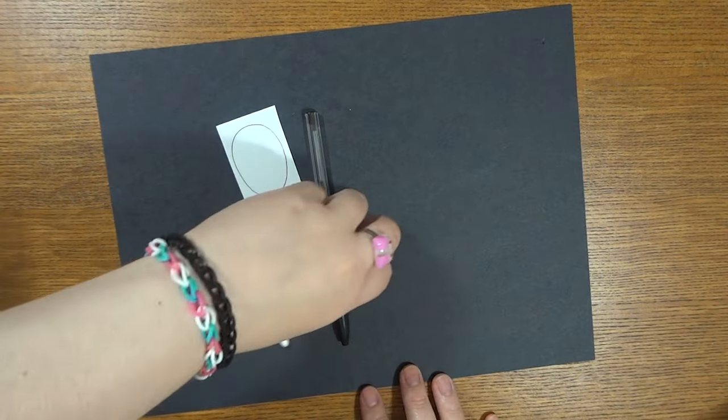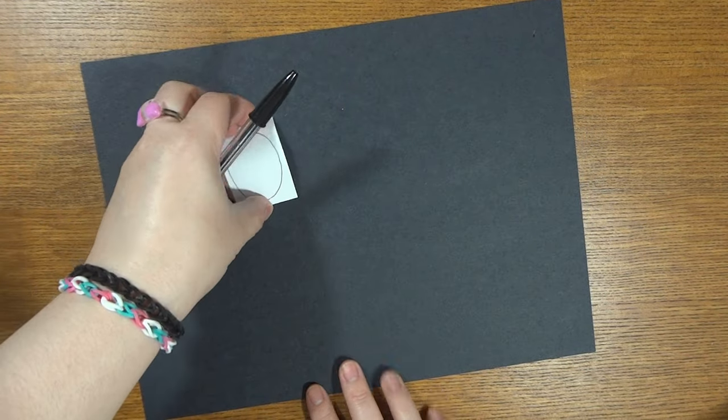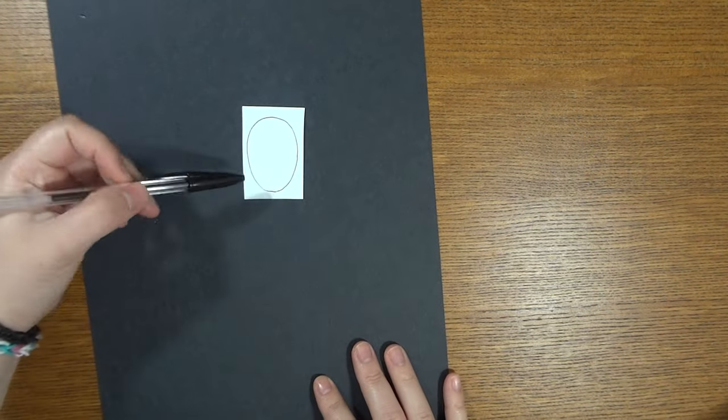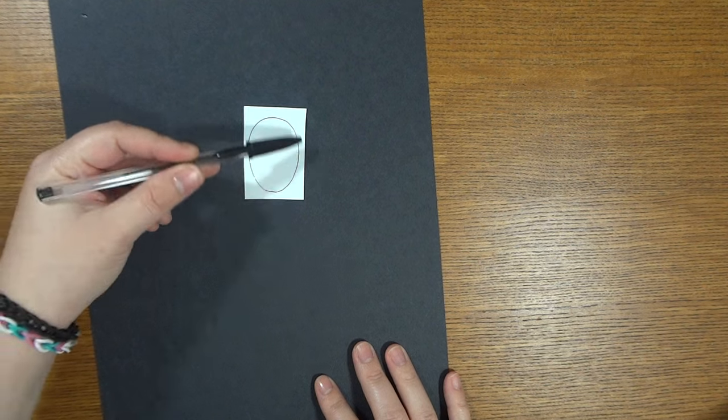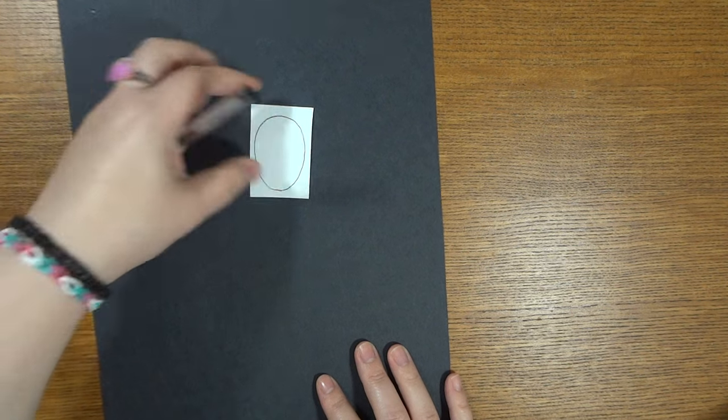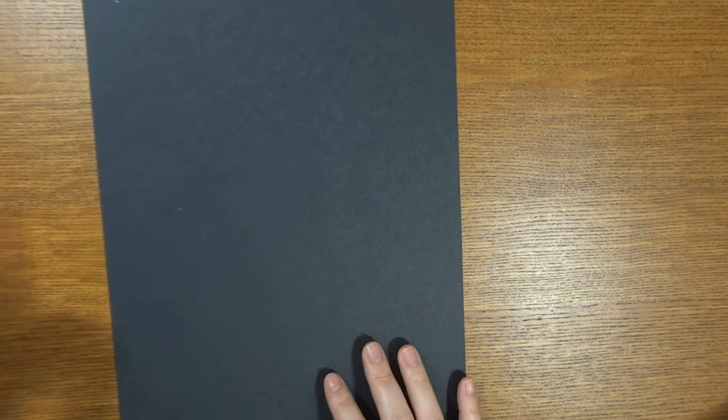The first thing you're going to do is take your small piece of paper and draw about an inch to an inch-and-a-half oval. You're going to cut this out - this is your skeleton's head. We're going to take our skeleton's head and place it on our paper.